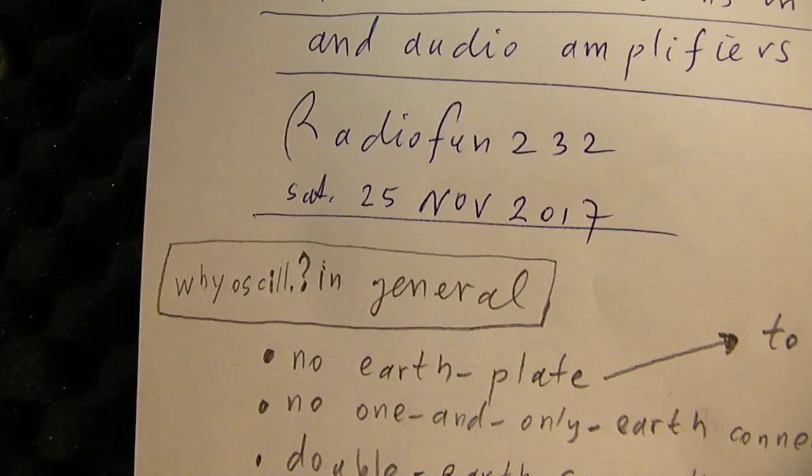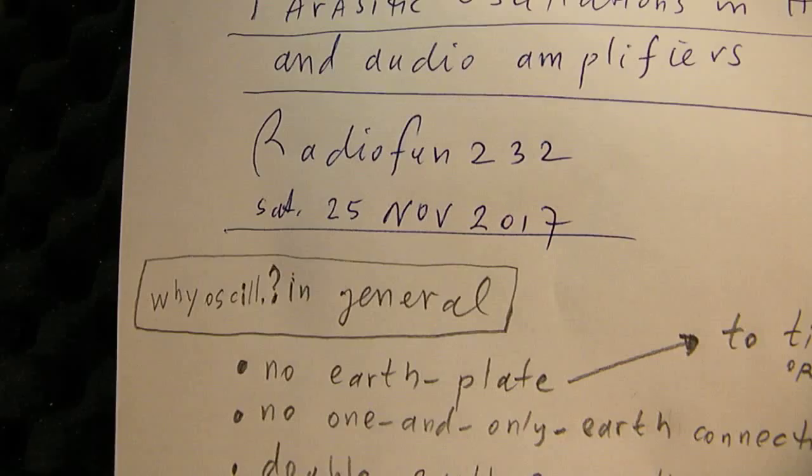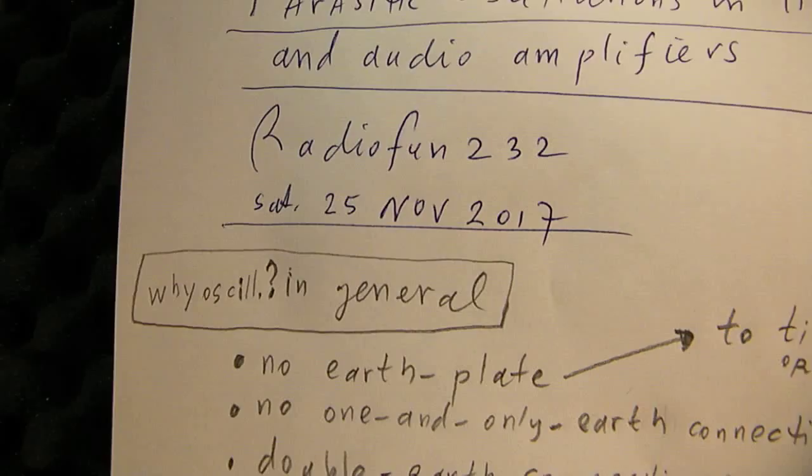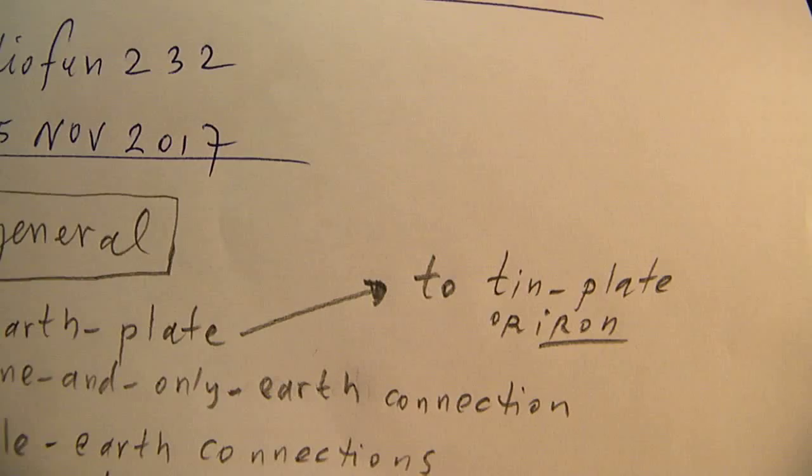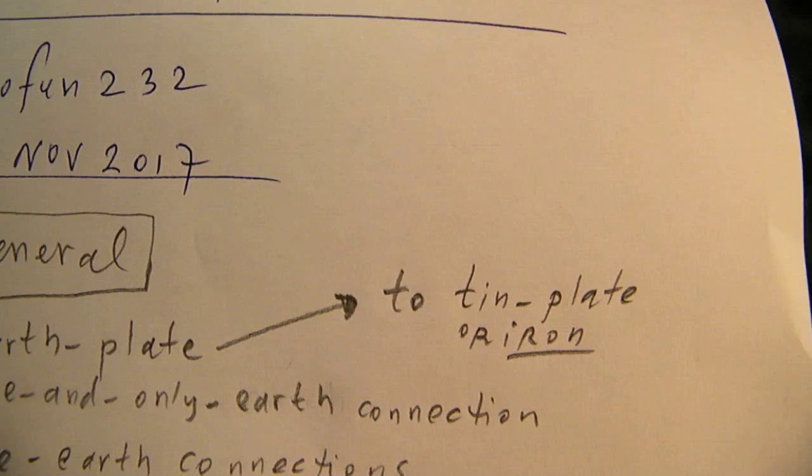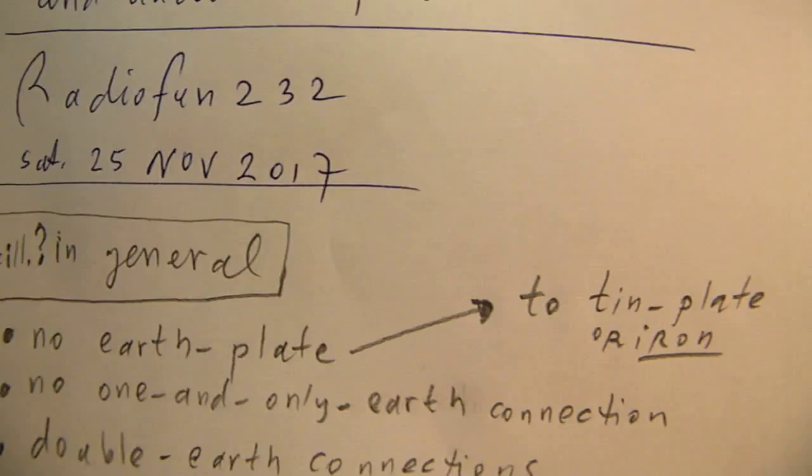In general, we can say that an audio amplifier gets extremely sensitive at its input when there is no earth plate. That earth plate has to be from tin plate or iron. Copper, for instance, or aluminum don't have good properties in shielding electronic circuits.